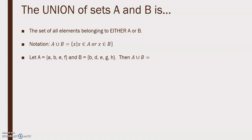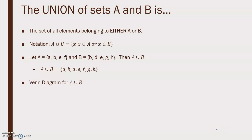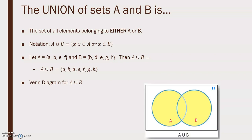We're going to let A equal {A, B, E, F} and B equal {B, D, E, G, H}. The union contains all the elements that are in either set: {A, B, D, E, F, G, H}. In the Venn diagram for A union B, everything in set A and everything in set B is shaded.